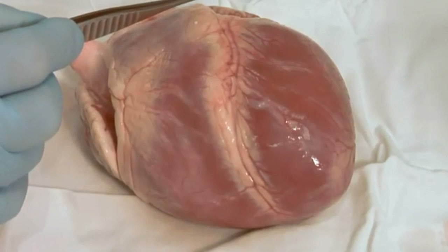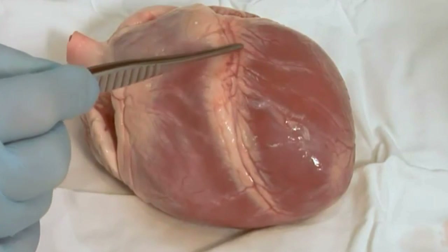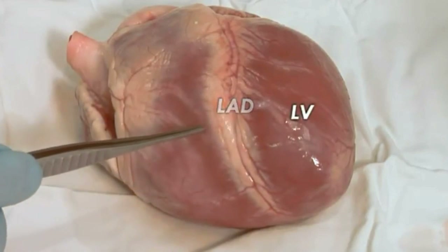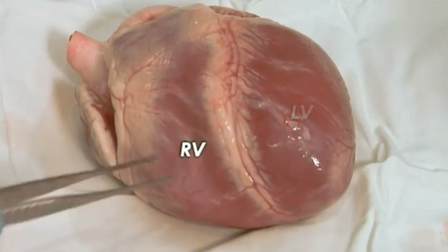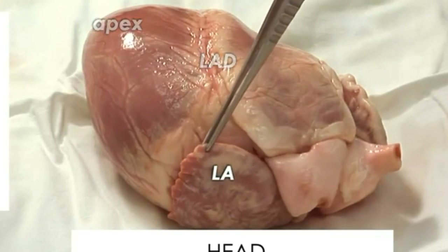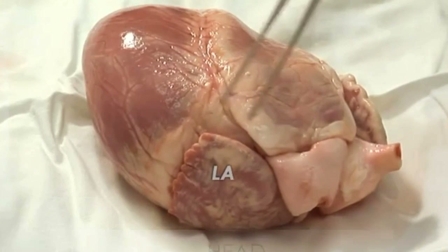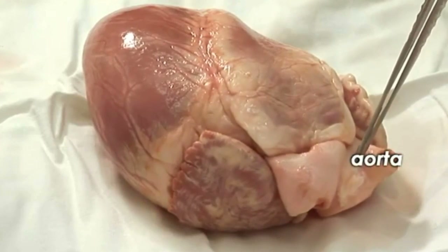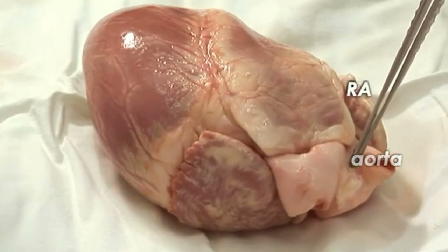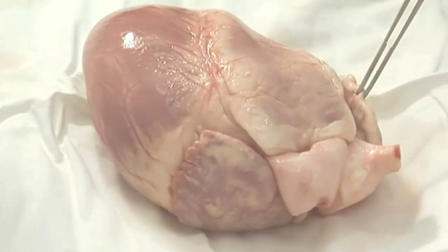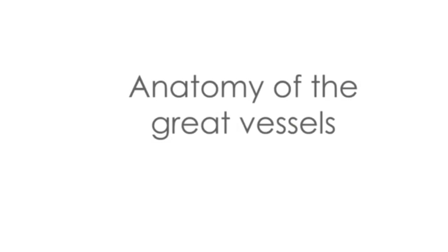Observing the anatomy of the heart, we can see the left anterior descending artery, also known as the LAD. Below it is the interventricular septum, with the left ventricle and right ventricle on either side. Above, you can see the thin-walled chamber known as the left auricle, the Y-shaped pulmonary artery, the aorta, and the right auricle.